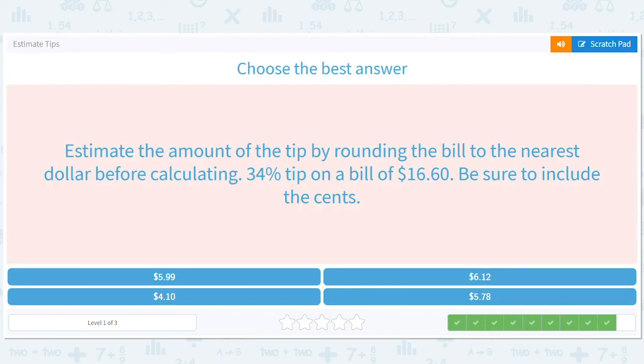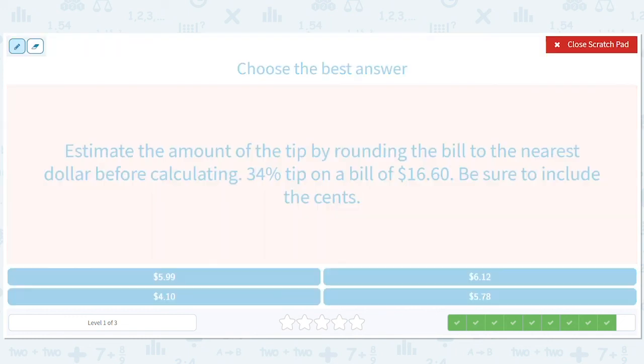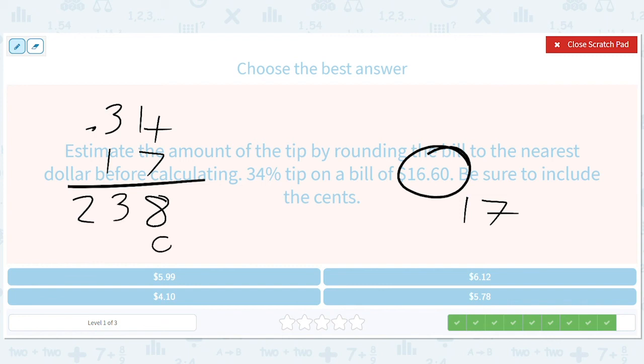And estimate the amount of the tip by rounding the bill to the nearest dollar before calculating. 34% tip on a bill of $16.60. Okay. So, that's a $17 tip. All right. $17 bill. And we'll work through it. So, 34 times 17. It's actually .34 times 17. It's going to give us a 28. And we'll have 7 times 3 is 21. So, 23. There'll be a 4 here. There'll be a 3 here. Okay. 8, 7, 5. So, we're going to have a $5.78 tip. Right? Two decimal places. Two decimal places. $5.78.